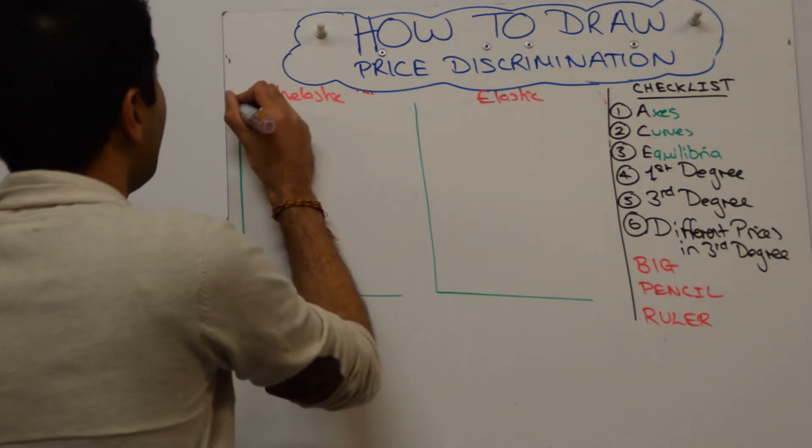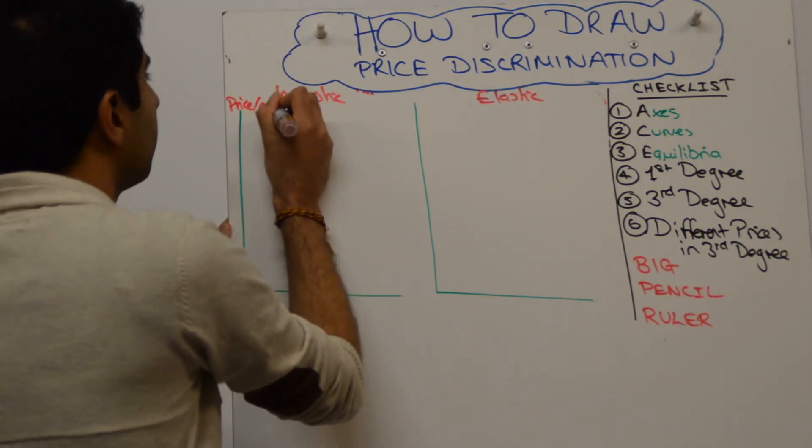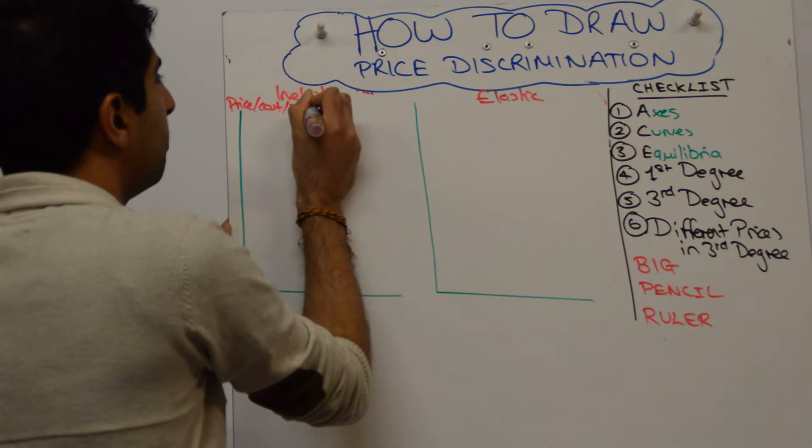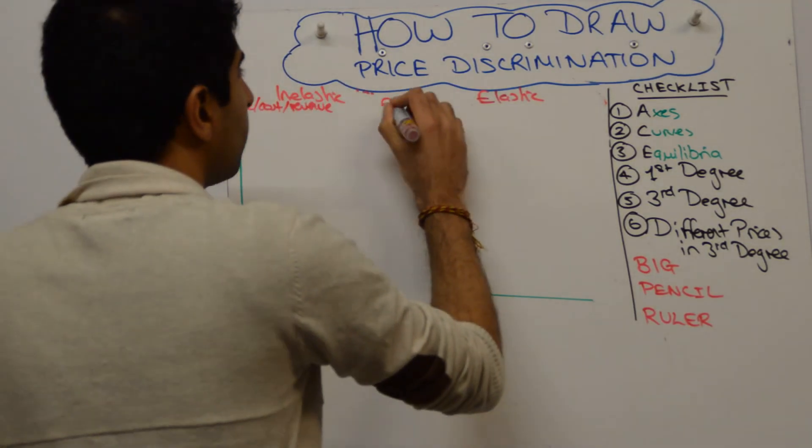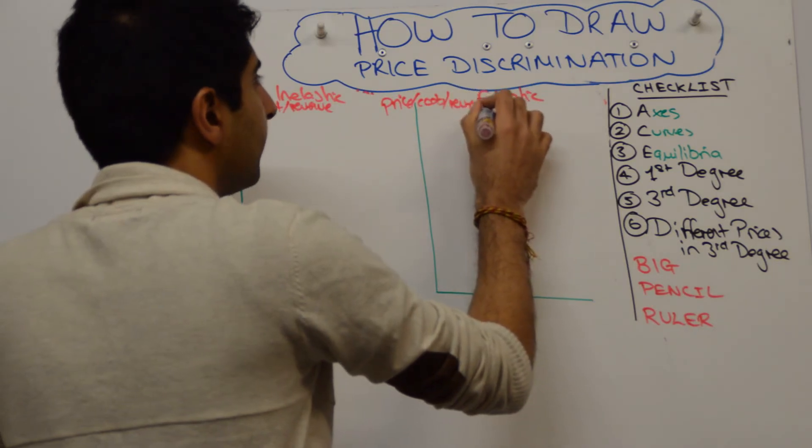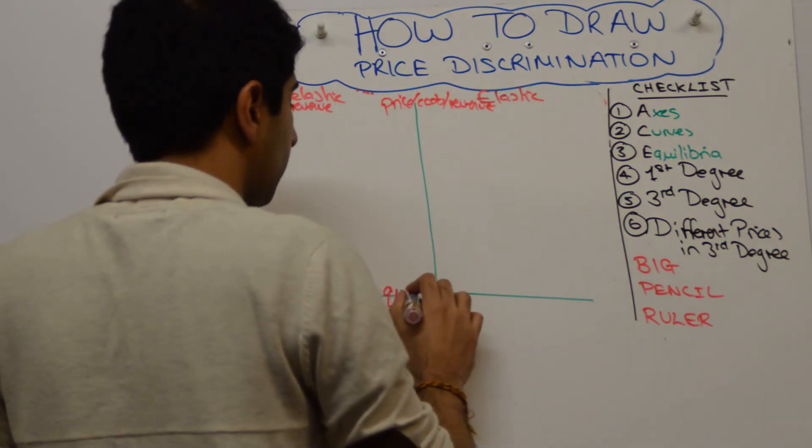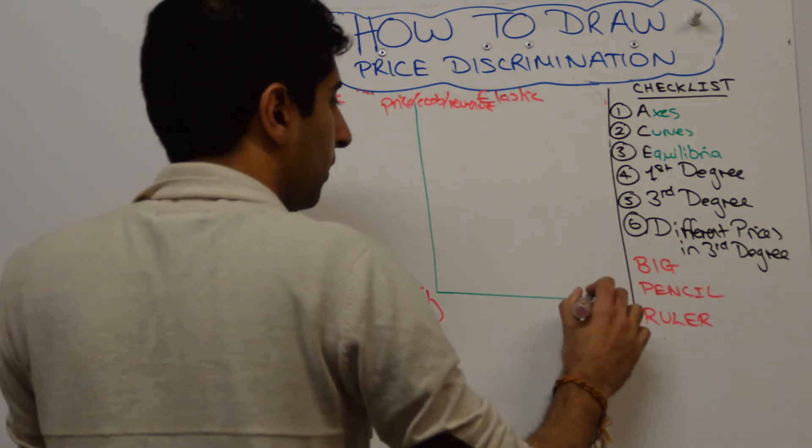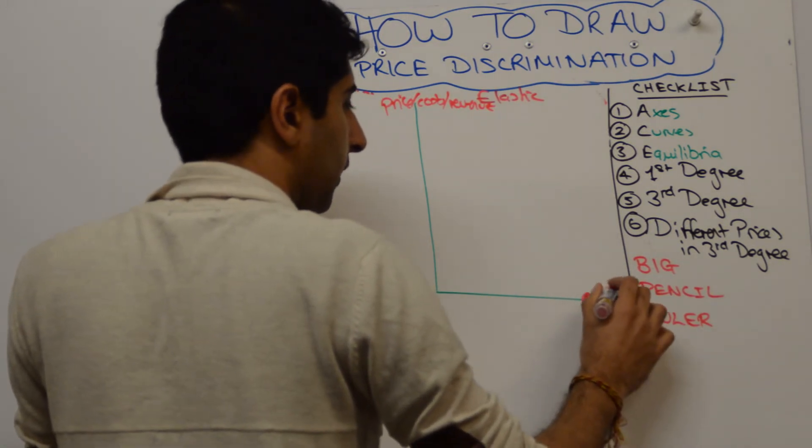So on the axis, we need to show price, costs, and revenue on both. Okay, so price, cost, revenue. And on the x-axis, it's going to be quantity on both.